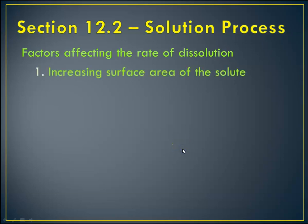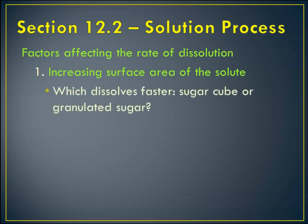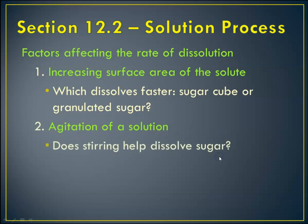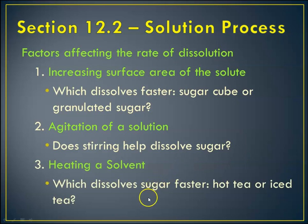So the solution process is what I was trying to illustrate there. There are various factors that affect the rate that something dissolves. You can increase the surface area of the solute—which dissolves faster, a sugar cube or granulated sugar? Obviously granulated sugar. You can agitate the solution. Stirring helps because you have more surface area contacting your solvent. And you can heat the solvent—that means the particles are all moving faster.